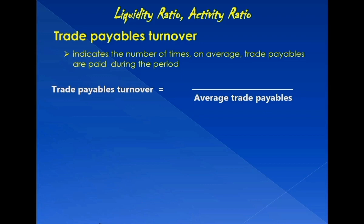You've got to think of the most appropriate, the most meaningfully related item to trade payables. What could be more meaningfully related to trade payables than their main source? In other words, where do trade payables come from? What transaction gives rise to the increase in trade payables? The answer is: purchase of goods or merchandise on account, or on credit — in other words, from credit purchases.